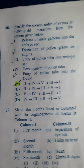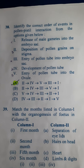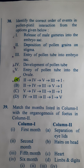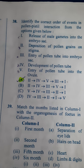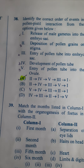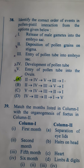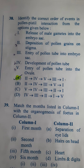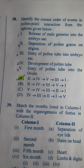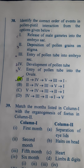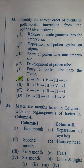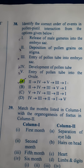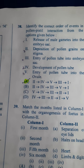Next one: Identify the correct order of events in pollen-pistil interaction. They have given five steps to arrange. The correct sequence is: deposition of pollen grain on the stigma first, then development of pollen tube in the style, the pollen tube then reaches the ovule, penetrates into the ovule, goes to the embryo sac, and finally inside the embryo sac two male gametes are liberated. So the correct sequence belongs to A.